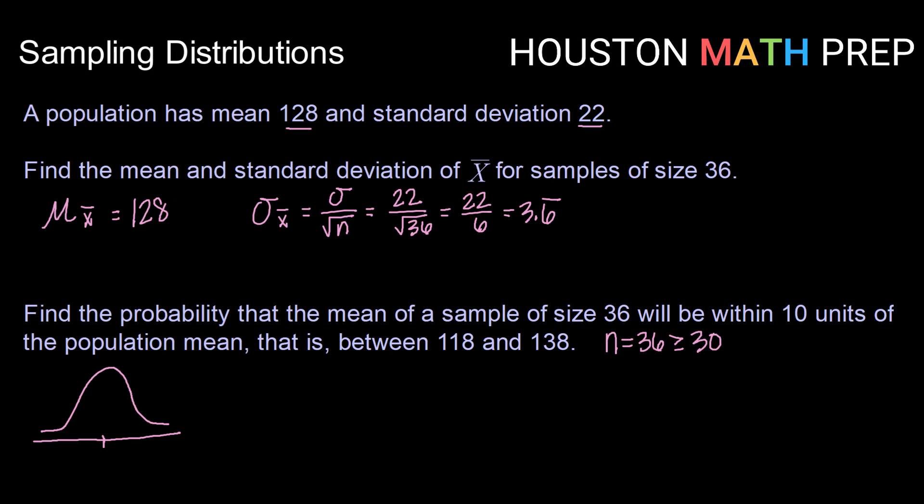With a mean that is equal to the population mean and a standard error that we calculated. So finding the probability of being between 118 and 138 can be accomplished using normal CDF. We know we need to give a lower bound, in this case 118, an upper bound, in this case 138. And remember we're using the distribution for X bar. So we want to use the mean of that distribution, which is 128, and the standard deviation of that distribution, which is our standard error here.